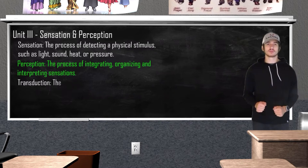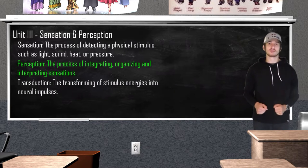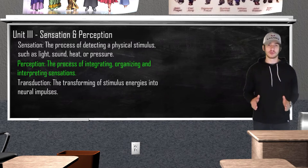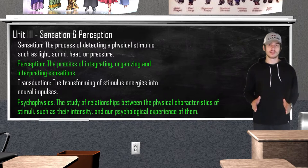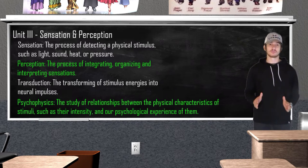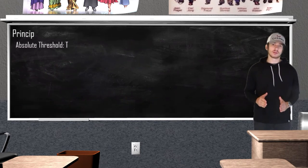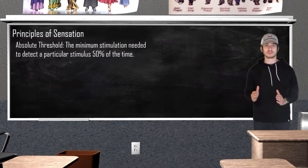Transduction is the transforming of outside stimuli into neural impulses. Each sense has a specialized receptor site responsible for turning sensory information into neural impulses through transduction that the brain can comprehend. Psychophysics is the study of how physical energy can relate to our psychological experiences, and it centers around the idea of sensory thresholds. The absolute threshold is the smallest possible strength of a stimulus that can be detected half the time.